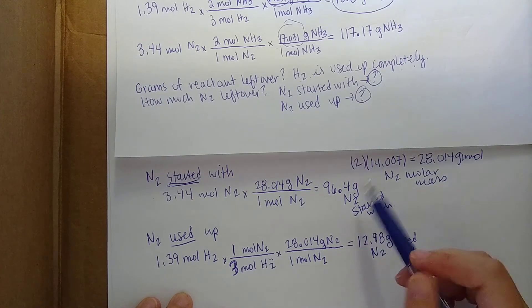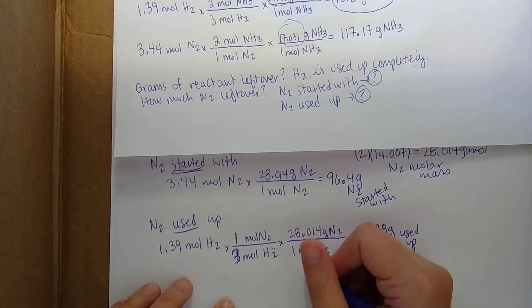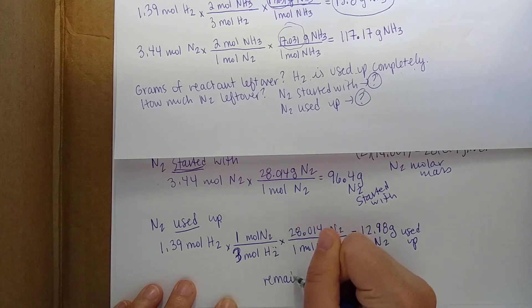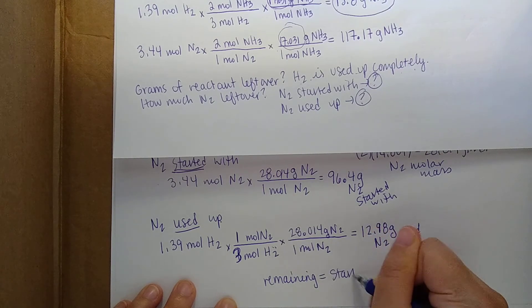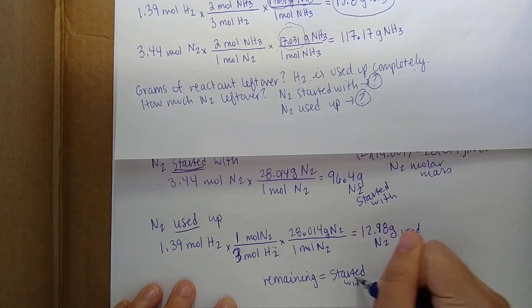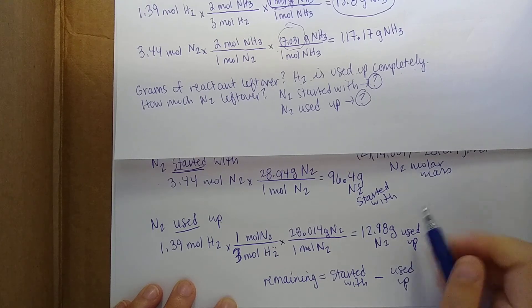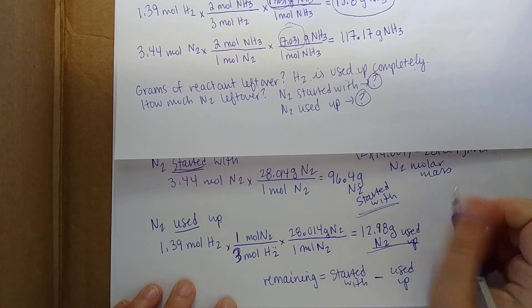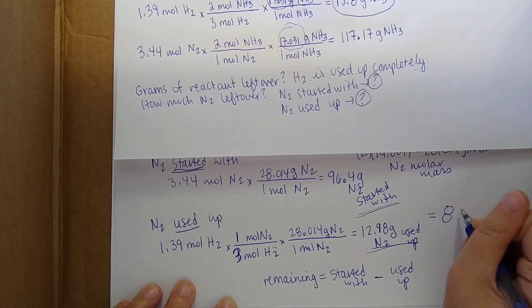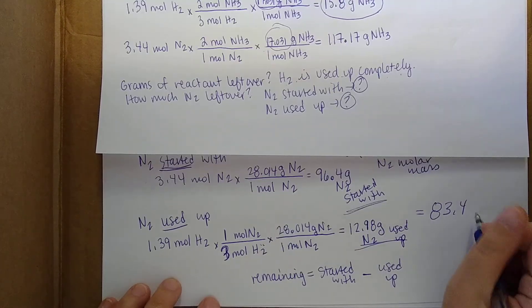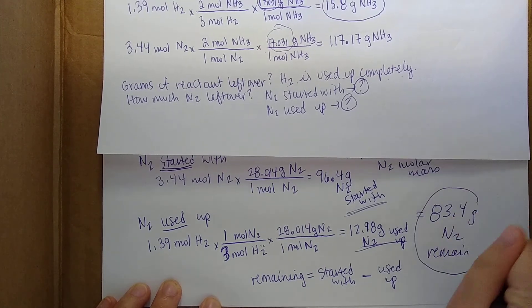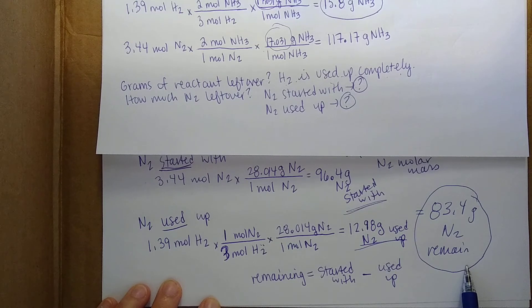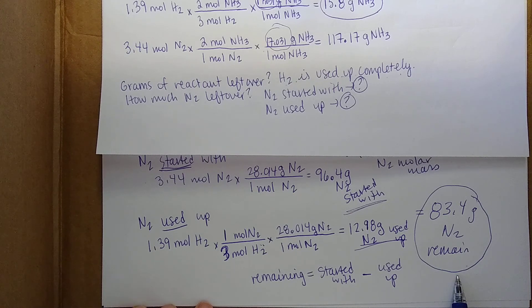To get the remaining N2, all we do is subtract. Remaining equals initial minus used up. When you subtract 12.98 grams from 96.4 grams, you end up with around 83.4 grams of N2 left over. So that's how to think about limiting reactants and how to find out how much excess reactant is left over.